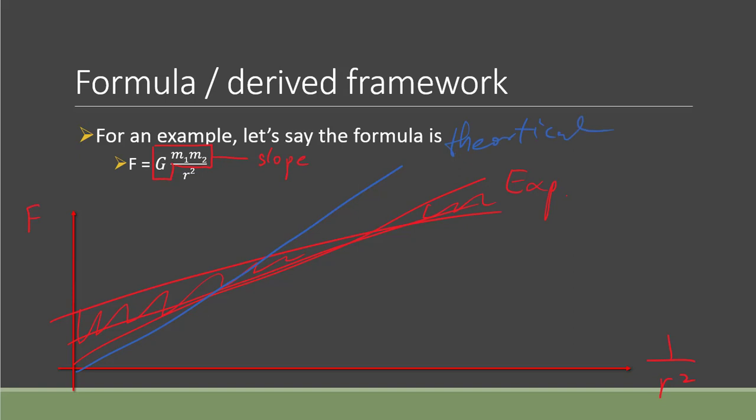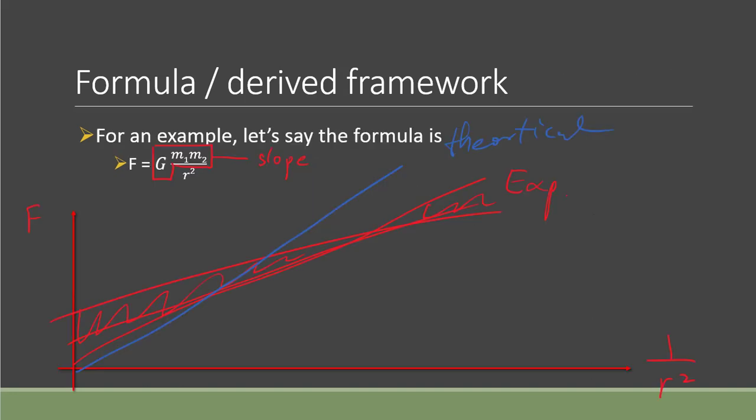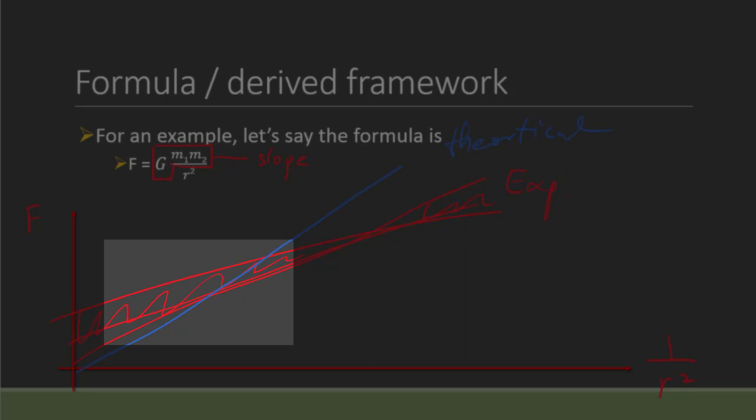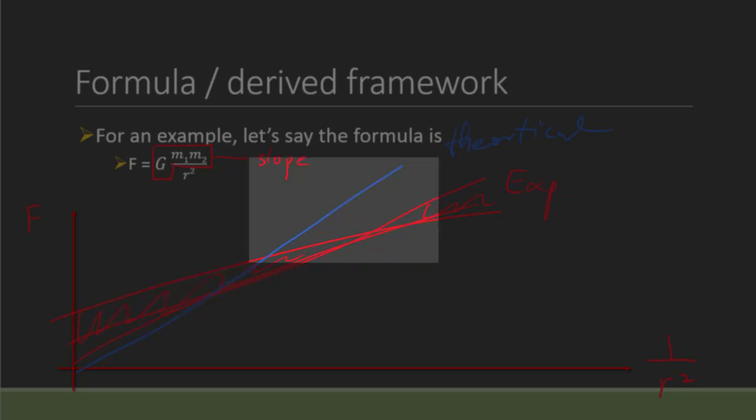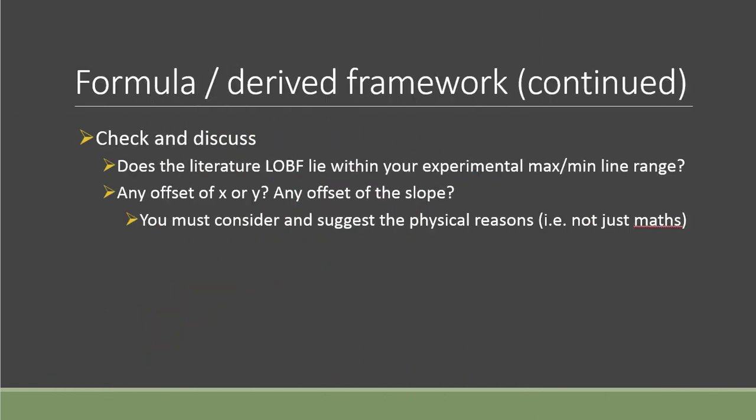This is where discussion starts. The first thing you should check and discuss is whether or not the theoretical literature line of best fit, the blue line, lies within your experimental max-min line range, the red range. The answer is obviously no in my example because you can see part of it overlaps, but here it doesn't overlap at all. So there must be some problem or disagreement between theoretical and experimental data.